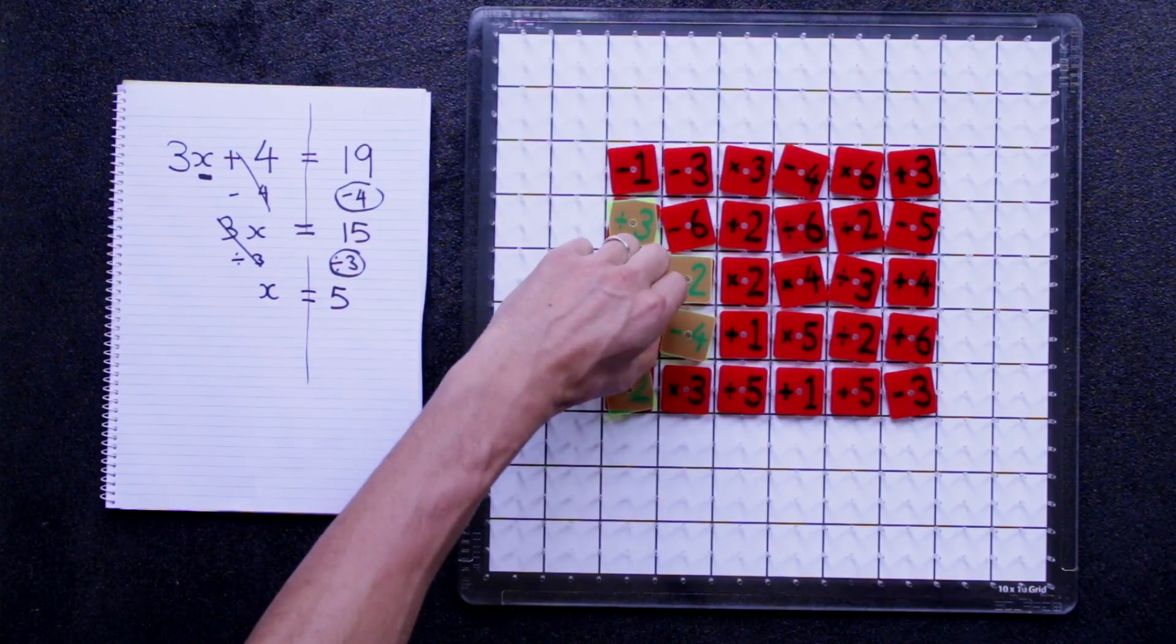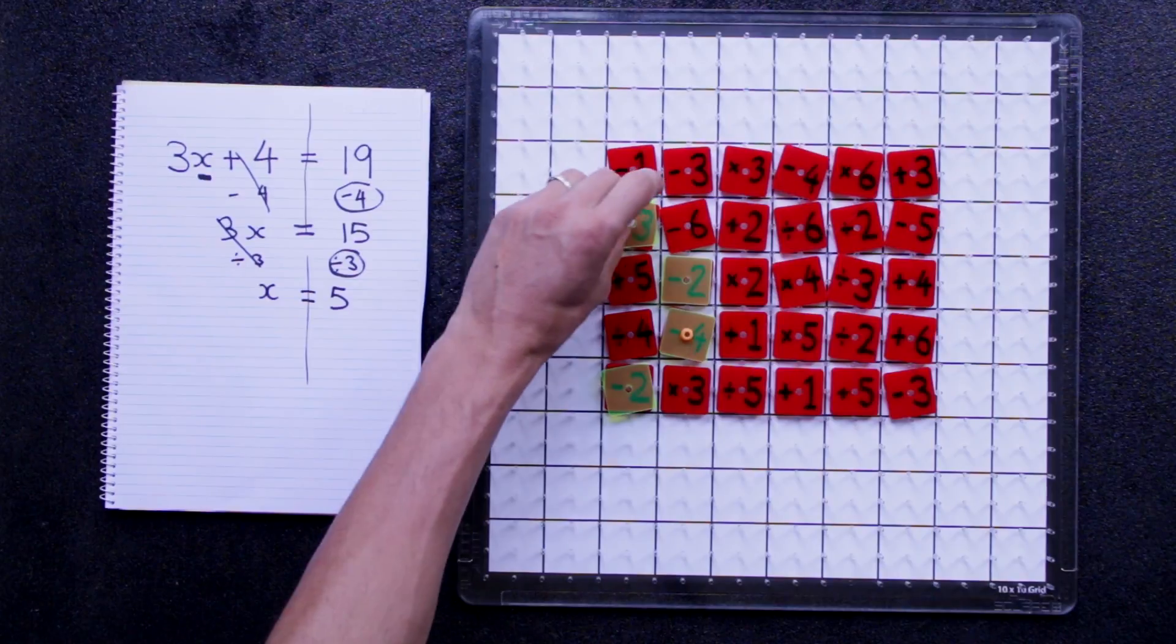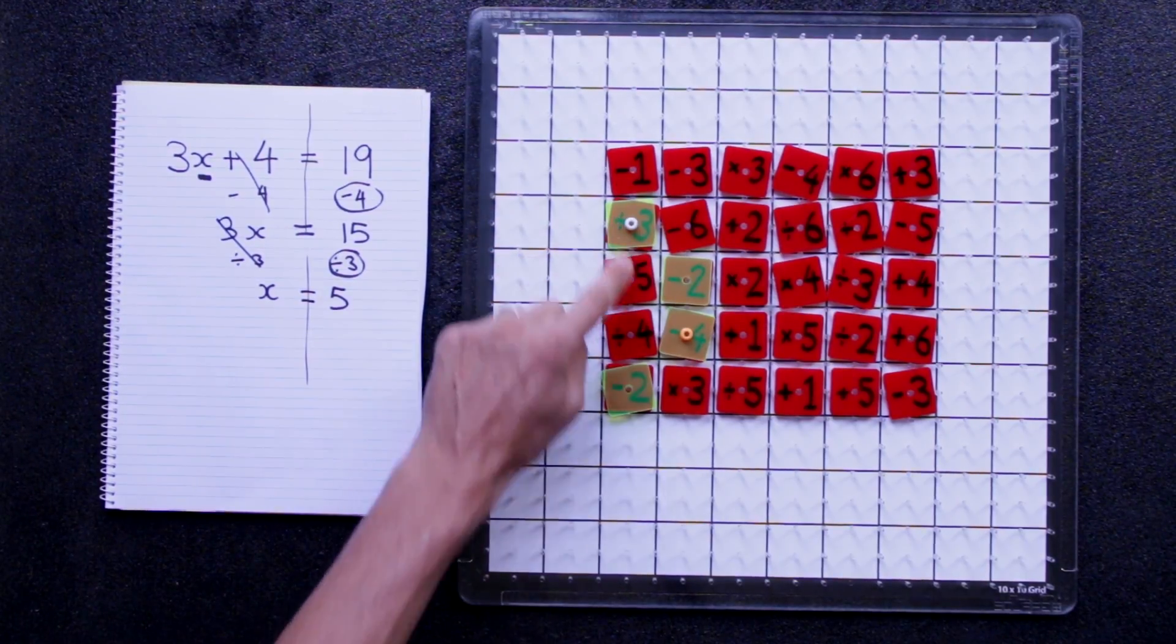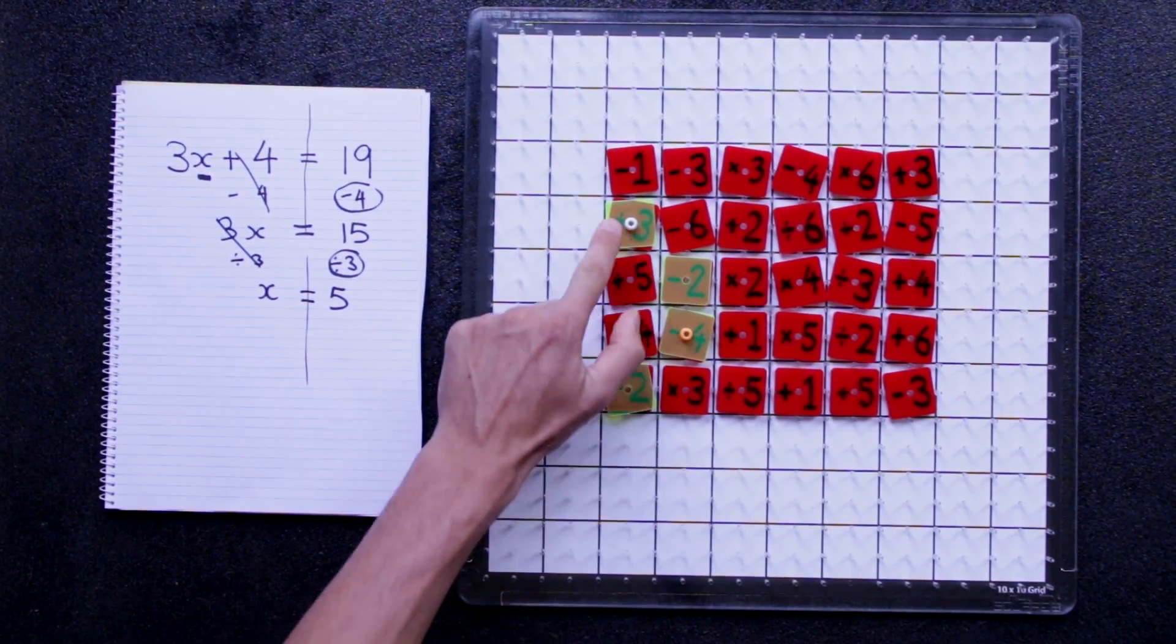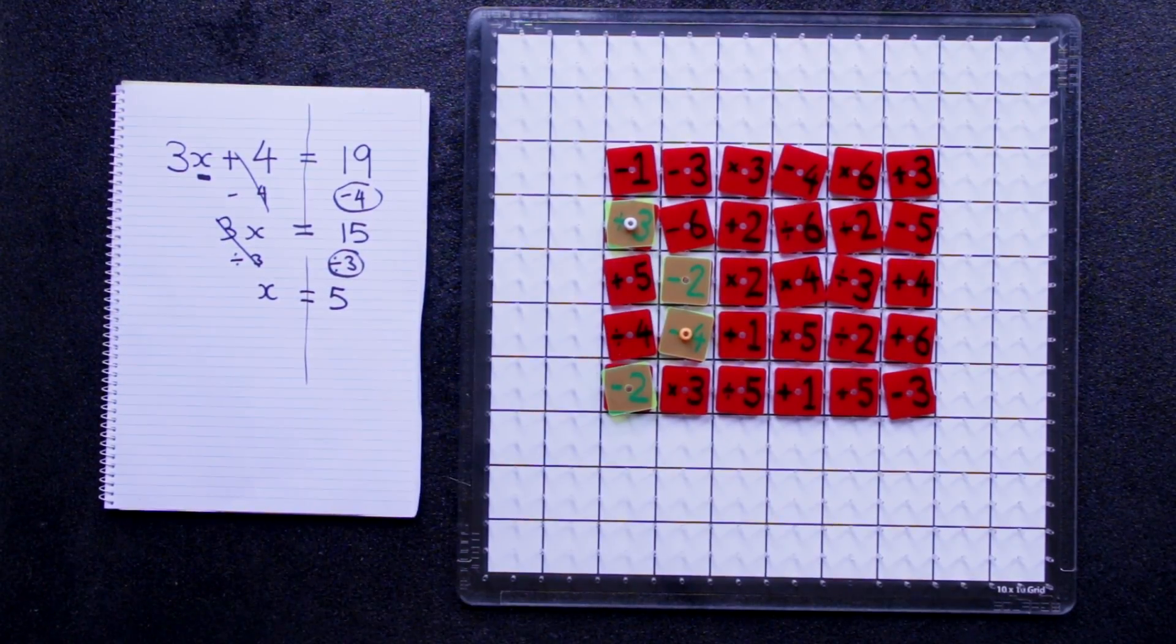So to show that we did, we put a bead on top of it. And then we won't use this minus 2 action, but we will divide by 3. So these are the 2 actions that you've chosen, indicated by using the bead. And it's taken 4 tiles to solve that equation.